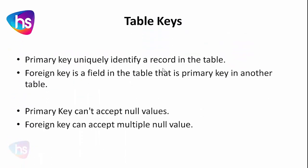Primary key uniquely identifies a record in the table, whereas a foreign key is a field in the table that is a primary key of another table. When we define a foreign key, that particular column is a primary key in another table.